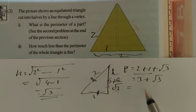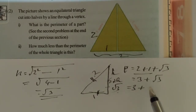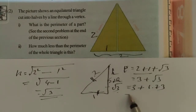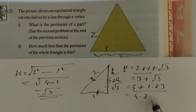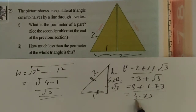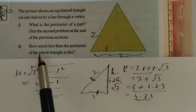Now we want to find the perimeter. Perimeter is equal to 2 plus 1 plus root 3. 2 plus 1 is 3, so the perimeter is 3 plus root 3. Root 3 is 1.73, therefore the total result is 3 plus 1.73 equals 4.73. The correct answer is 4.73.